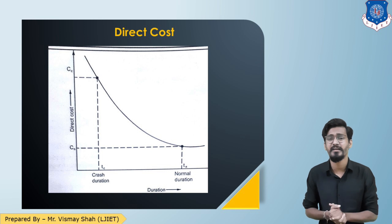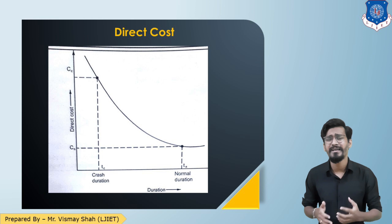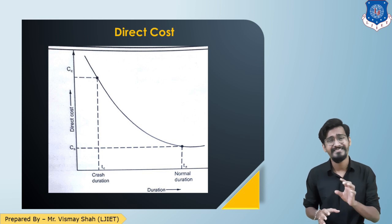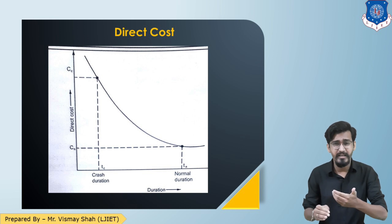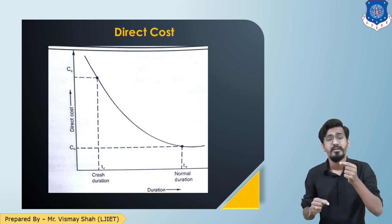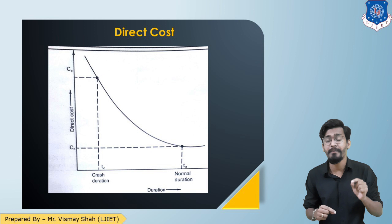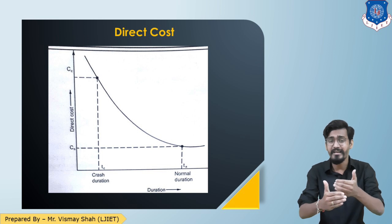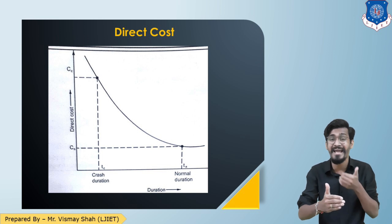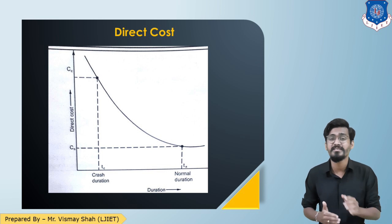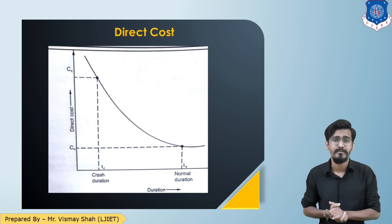At an optimum duration there is an optimum cost. But when we try to reduce the duration, the direct cost increases proportionately. The optimum crash point is the crash duration — an activity can be reduced up to a certain point. That is your crash duration, and at that point the cost is known as crash cost.